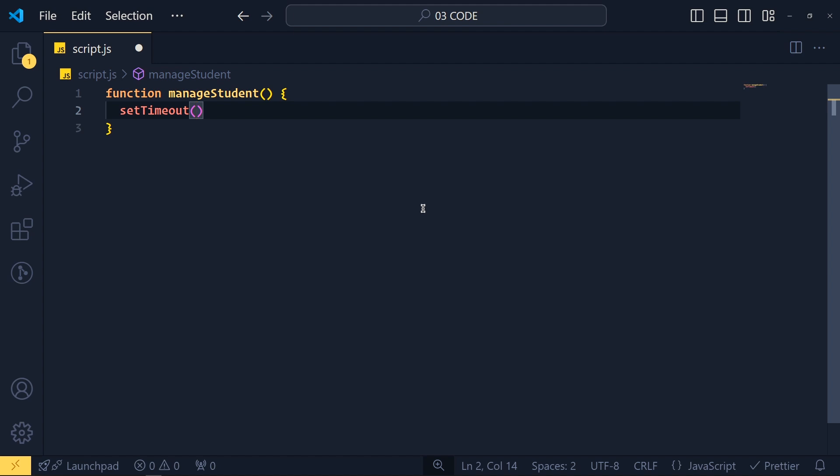And at the first position, what we pass? Right, not just a function, we pass a callback function. And at the second argument, we pass milliseconds, let's say 3000 milliseconds. Now when we complete the data fetching after 3 seconds, we want to run another function which will update that student's data.